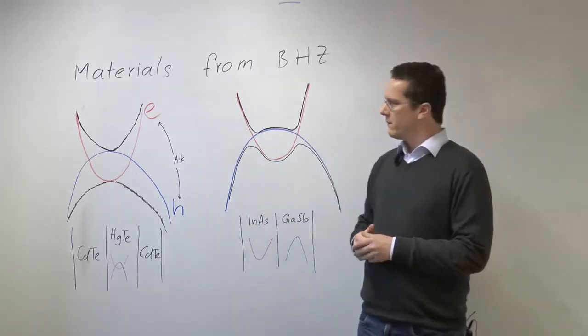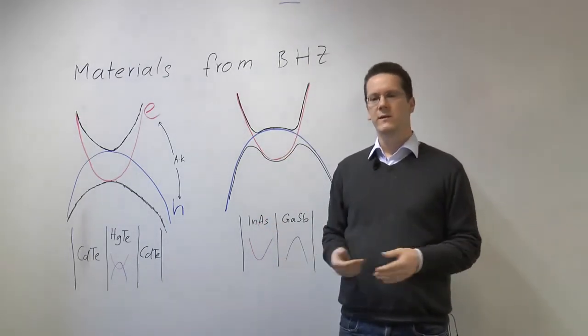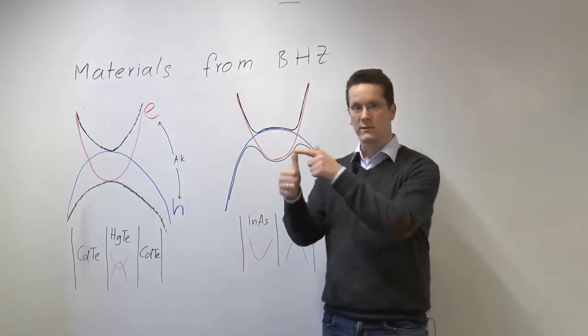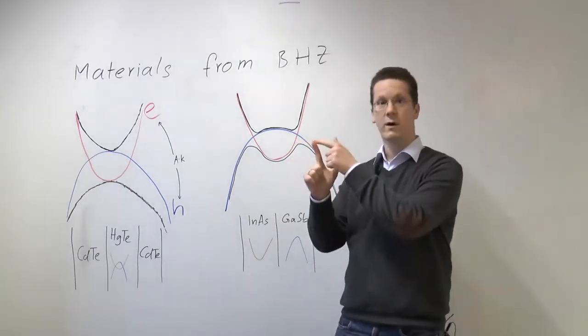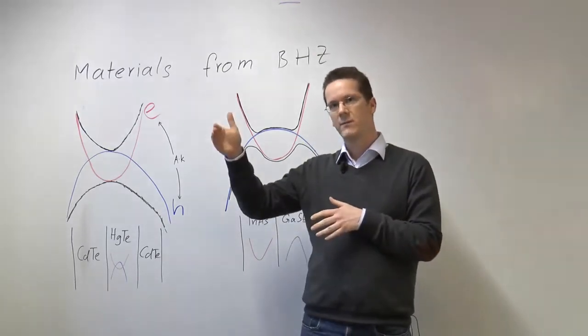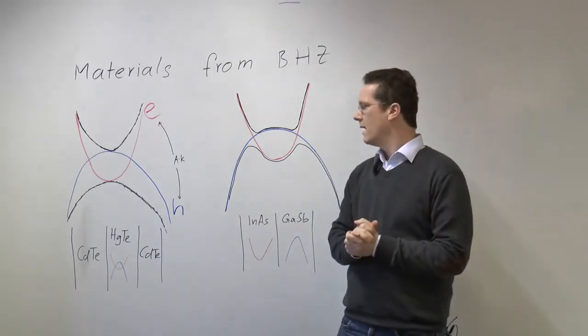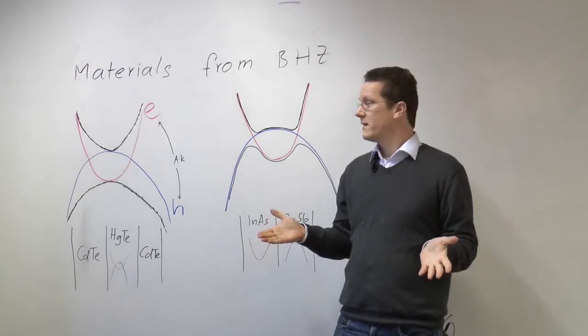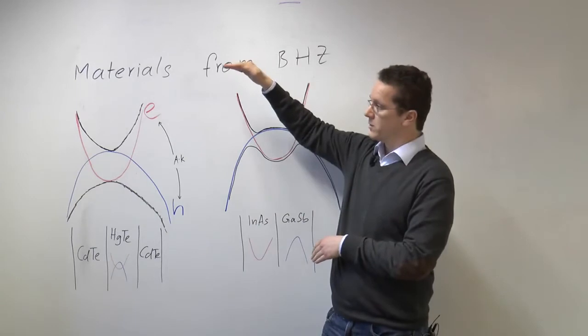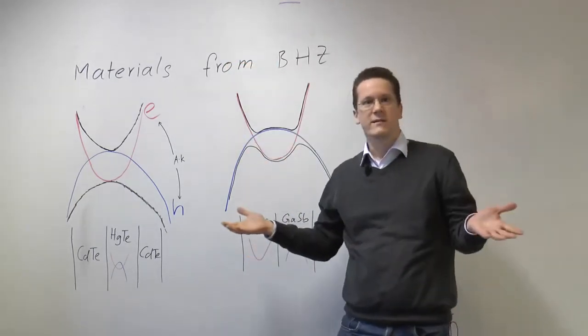Now we have these four ingredients for the BHZ model. It turns out that nature actually gives us in a very common material three ingredients for free, namely in normal semiconductors. Those have electrons, those have holes and they have a k-linear coupling between them because the electrons come from S-like orbitals and the holes come from P-like orbitals. Now what's missing usually in semiconductors is the band inversion because usually you have the electrons on top, then you have a band gap and then you have the holes at lower energies. So that's a trivial band structure.